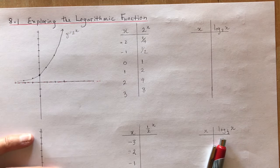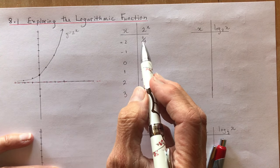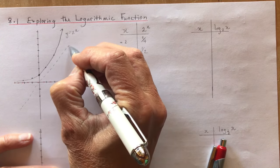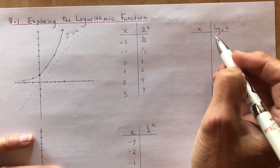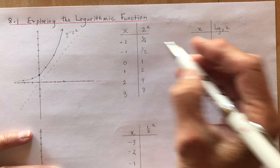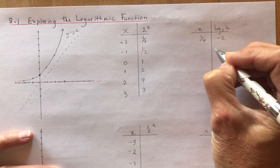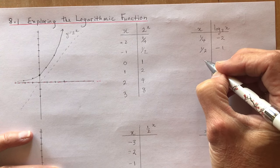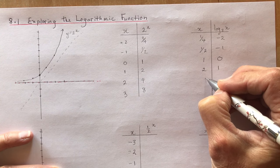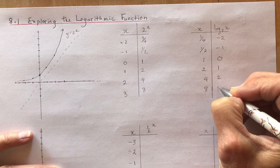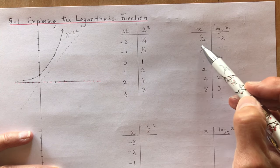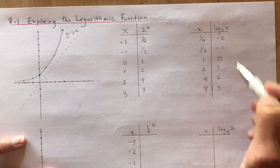The logarithmic function happens to be the inverse of the exponential function, and if you recall, inverses are reflections about the line y equals x. So in order to find the logarithmic function, all you need to do is reverse these coordinates. This is really important when you're trying to do transformations of these functions. You want to be able to find the exponential function points first, then flip them and apply the transformations.